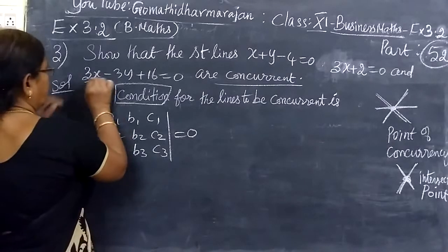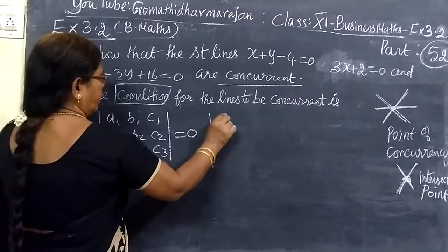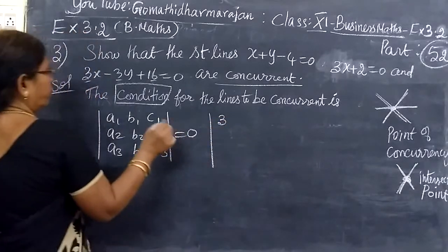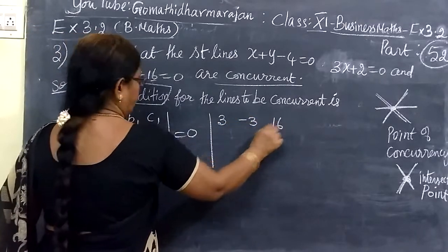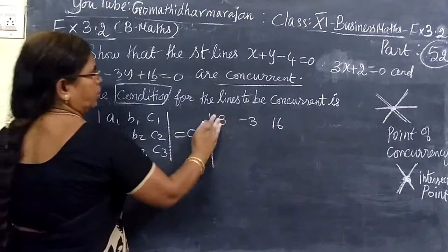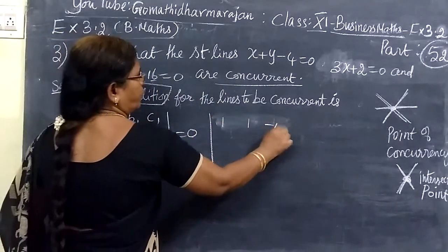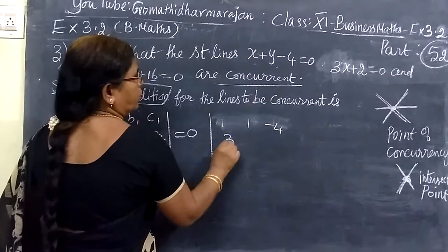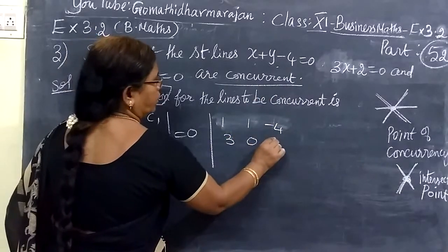All right. So, this is the value. A1 is 3. Then minus 3. Then 6. Here we have 1, 1, minus 4. Then 3.